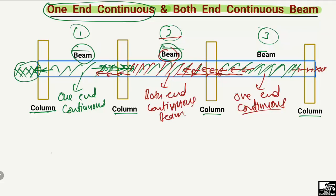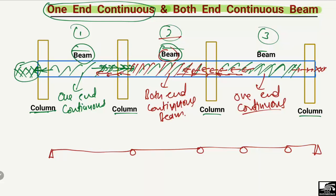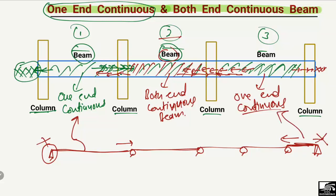Similarly, if we draw the free body diagram for a frame structure with more supports, the horizontal members are the beams and the vertical members are the columns. The beams at the outer ends will be known as one-end continuous beams because one end is discontinuous while the other end is continuous. Similarly, the next beam also has one end continuous and the other end discontinuous, so it is also a one-end continuous beam.